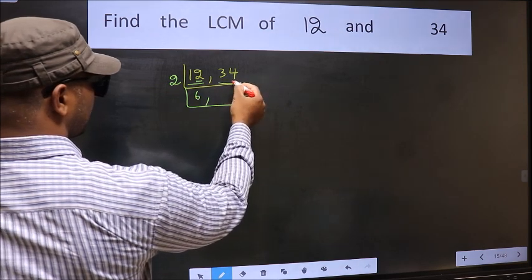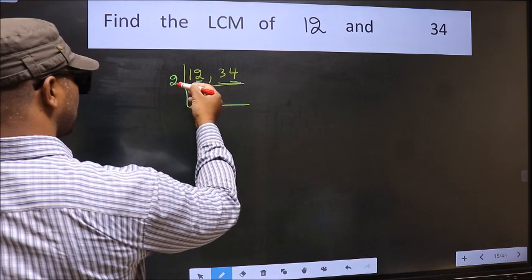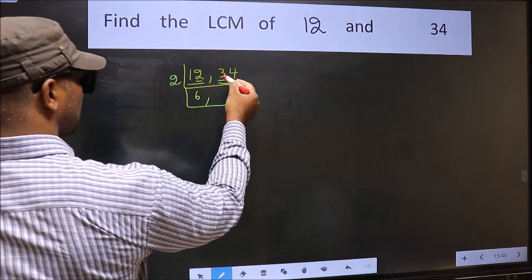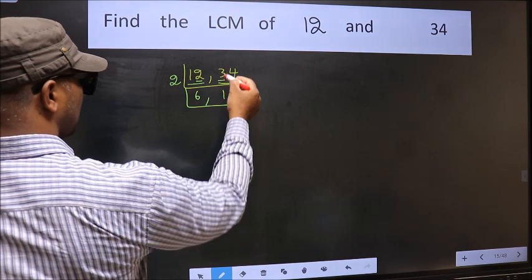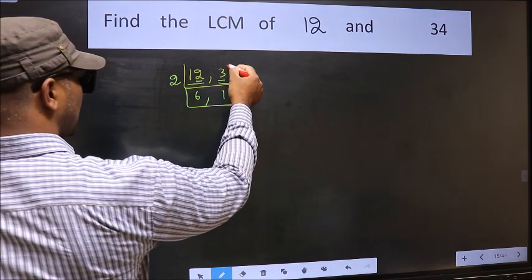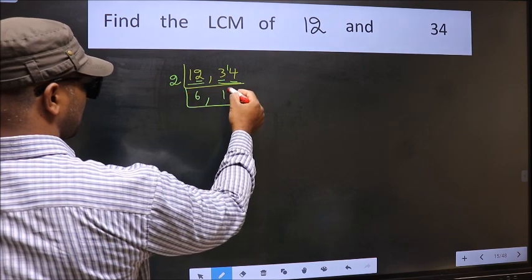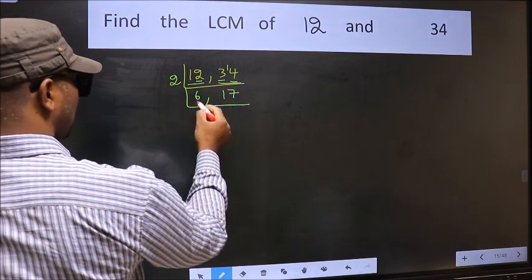Last digit 4, even. So this number is divisible by 2. First number 3, a number close to 3 in 2 table is 2, 1, 2. 3 minus 2, 1, 1 carried forward 14. When do we get 14 in 2 table? 2, 7 is 14.